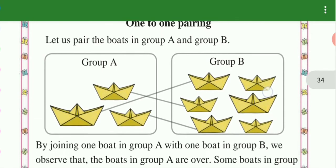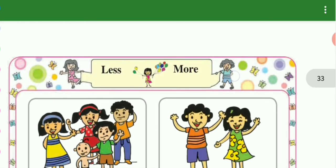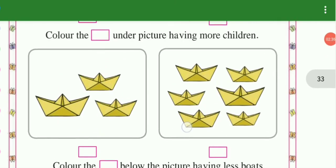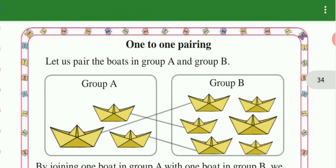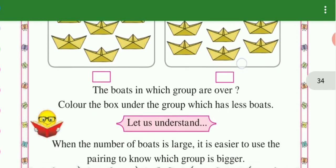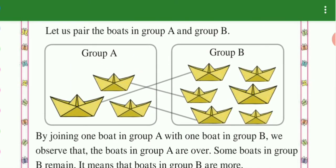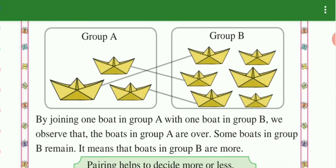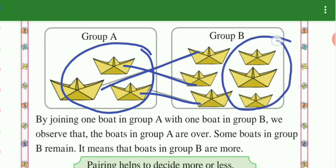One to one pair. Less and more, less and more. Spelling — color the box below the picture having more. Homework — next, one to one pair. By joining the boat in group A with one boat in B, we observe that the boats in A are over and some boats in B remain.